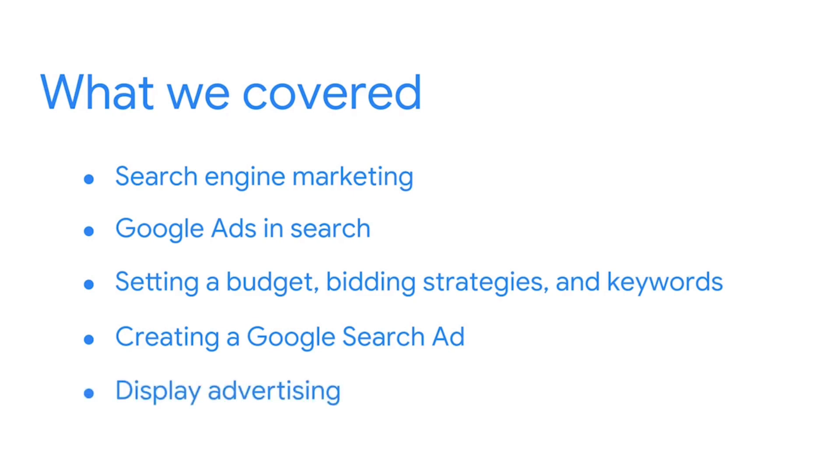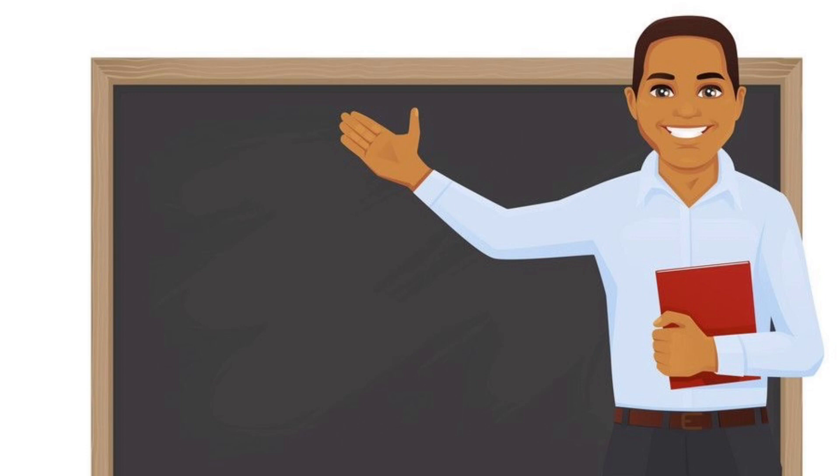And then lastly, we discussed display advertising. You learned about why a marketer would choose to have a display advertising campaign, the different types of display ads available, and then we went in depth on the responsive display ad format in Google Ads and how to optimize one to meet your goals.